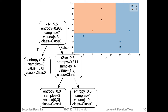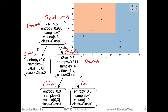Here's the cleaner version: we have the split x1 greater or equal to 5.5, and then x2 greater or equal to 10.5. With that, we can get 100% training accuracy, because it splits the dataset perfectly into class zero and class one. This is how scikit-learn would draw the decision tree for this dataset. You can see there's a lot of information in each node — we start at the root node, which is also the parent node that we split into two child nodes: child zero and child one.